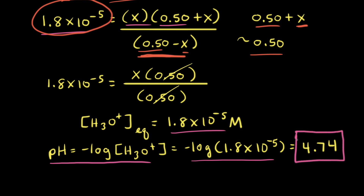So if you react a weak acid with a strong base and the weak acid is in excess, the pH of the solution will be less than 7 — it will be acidic.